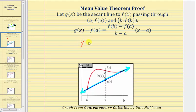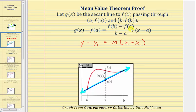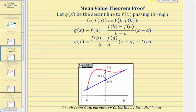Now we'll find the equation for g of x in point-slope form, which is y minus y sub one equals m times the quantity x minus x sub one. Using function notation, g of x minus f of a equals the slope of the secant line times the quantity x minus a. Next we'll solve this for g of x by adding f of a to both sides of the equation.